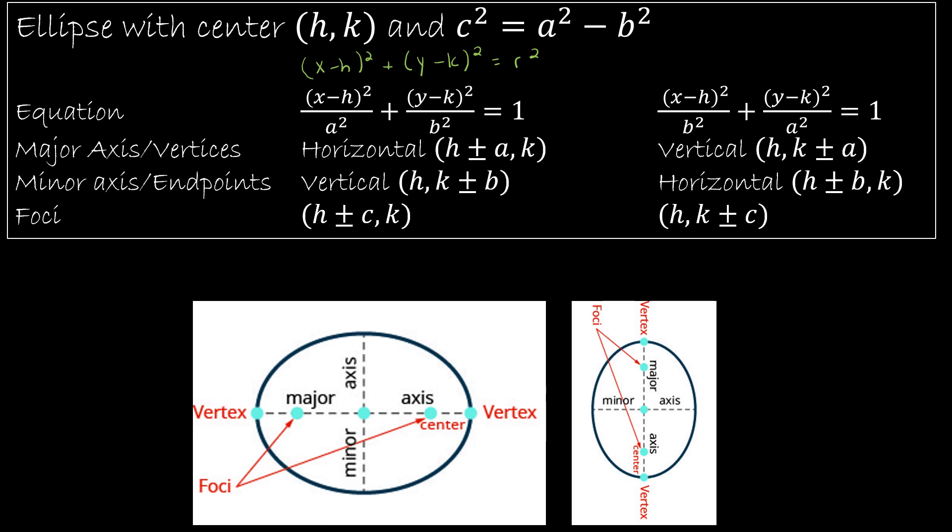So the reason I bring that up is quite often they're going to give you something that looks like this, or say they give you a value over here that's 16 or 9 or 7 or whatever. And you would have to then determine, okay, is this a circle or is it an ellipse? And an ellipse, the biggest thing is that a is going to be greater than b.